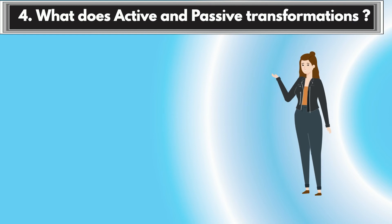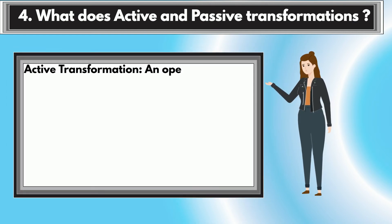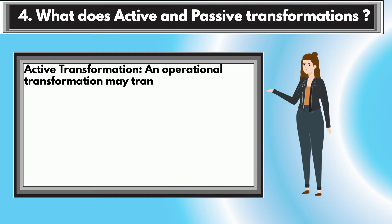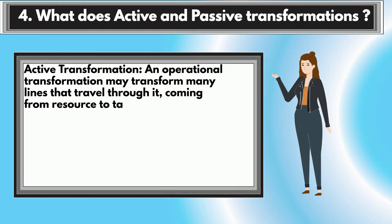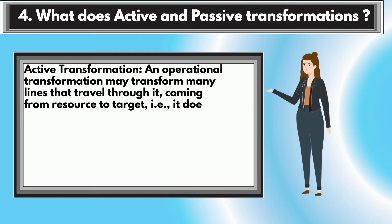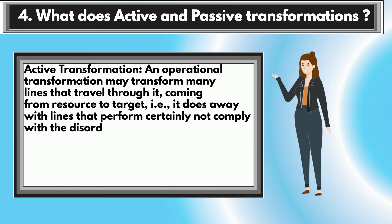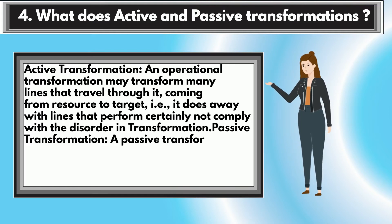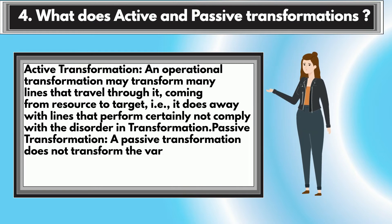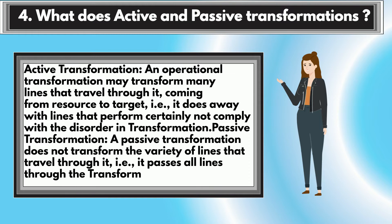Question 4: What are Active and Passive Transformations? An active transformation may transform many lines that travel through it, from source to target — it does away with lines that do not comply with the condition in the transformation. A passive transformation does not transform the number of lines that travel through it; it passes all lines through the transformation.